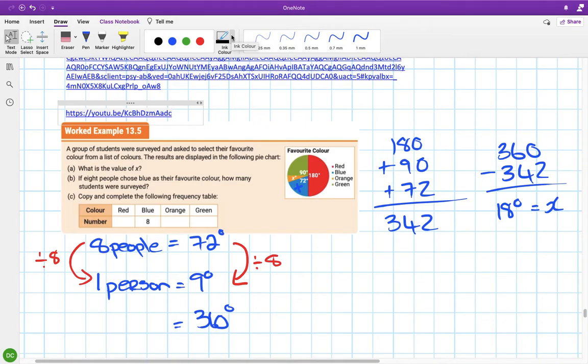Now, if eight people chose blue as a favorite color, how many students were surveyed? What we're looking for here is the full circle, which is 360 degrees. So if I can figure out what one degree is, then I can figure out what 360 is, right?